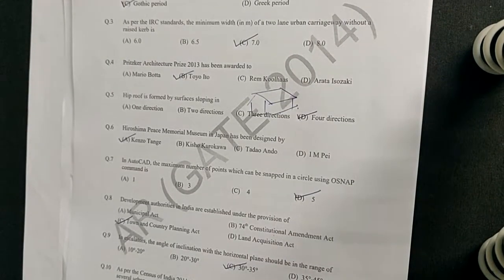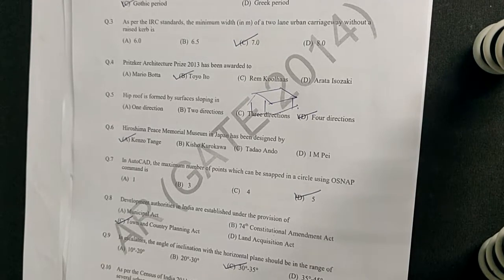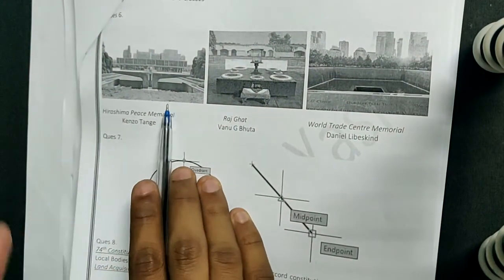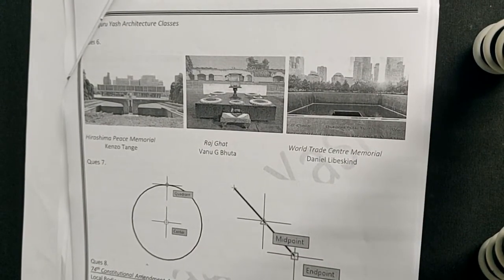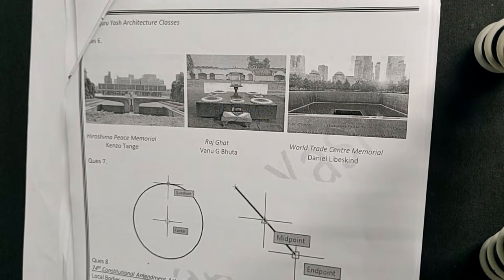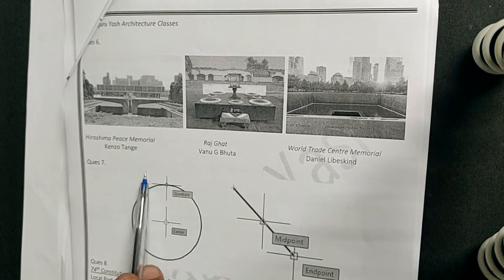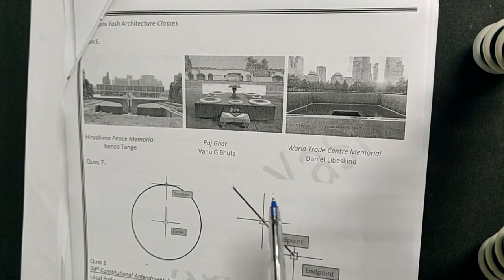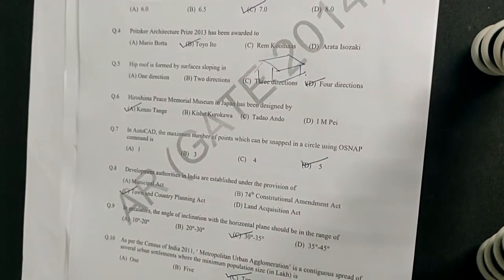The next question: the Hiroshima Peace Memorial Museum in Japan was designed by whom? It was designed by Kenzo Tange. You can download the original colored PDF from the description box. We also have the Rajghat by Vanuji Bhutta and the World Trade Center Memorial by Daniel Libeskind.